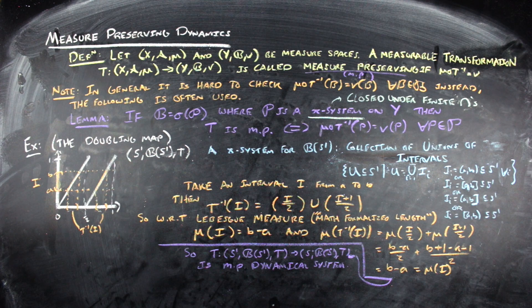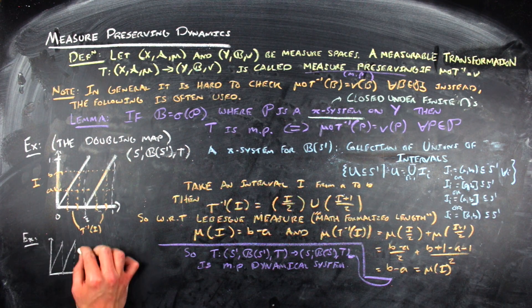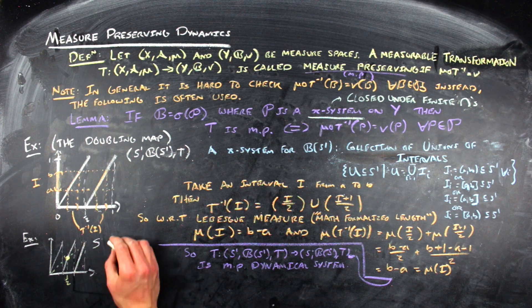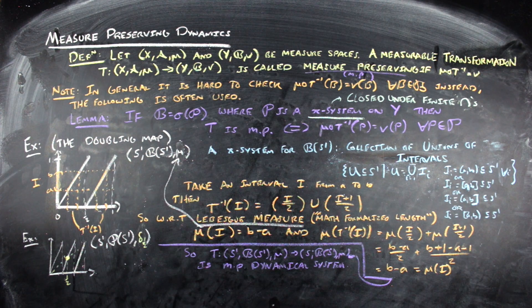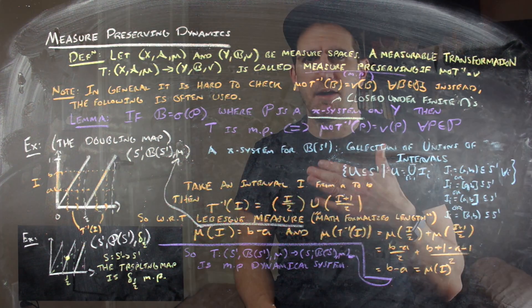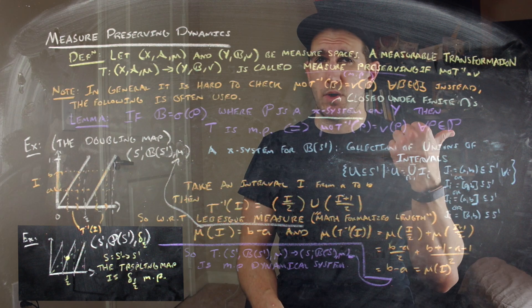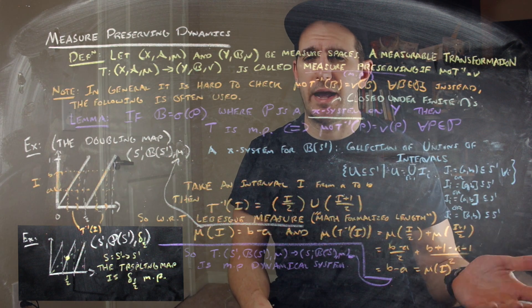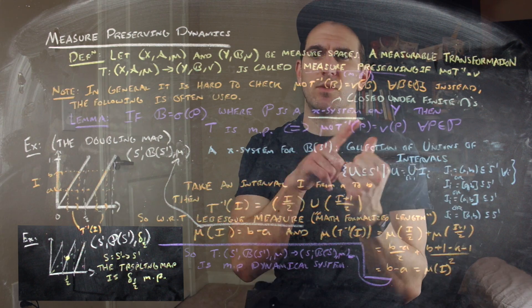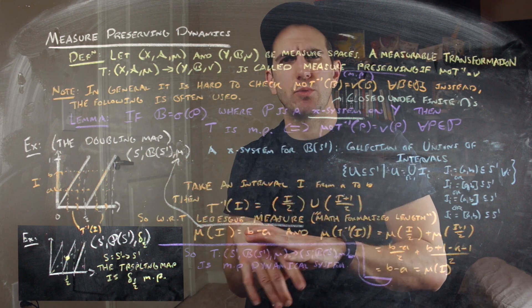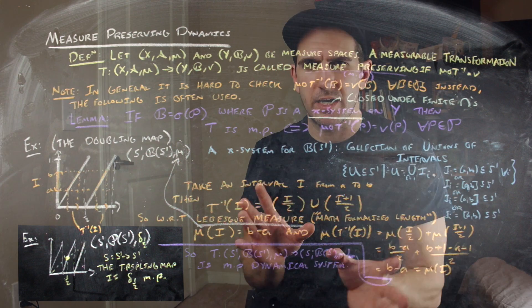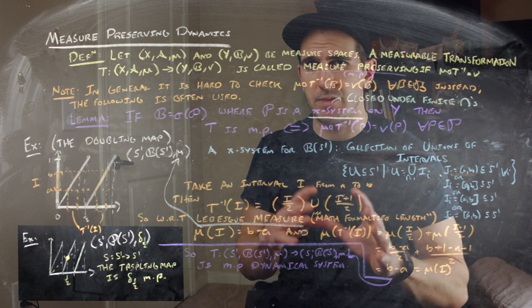If we look at the tripling map, which also preserves Lebesgue measure, and instead consider the Dirac measure of concentration 1 at the point x = 1/2 — because 1/2 is a fixed point of the tripling map — that Dirac measure will also be preserved. You have to remember you're working with pre-images: going backward from anything containing 1/2 still contains 1/2, and if a set didn't contain 1/2 going backwards, it couldn't have contained 1/2.